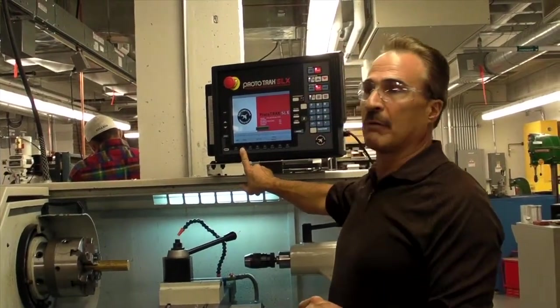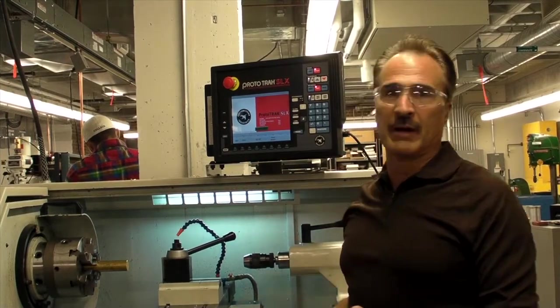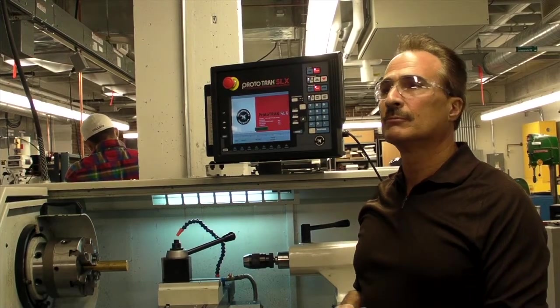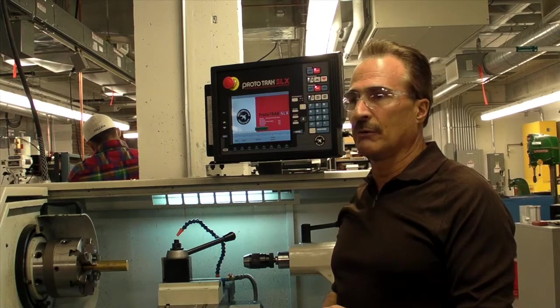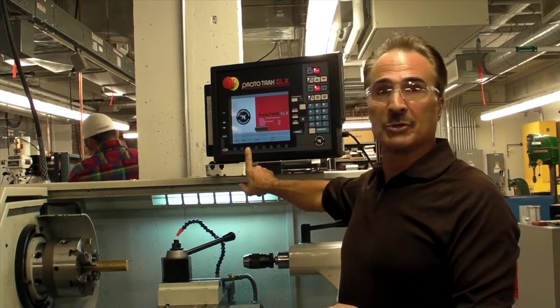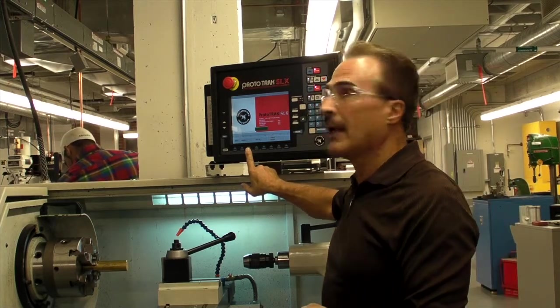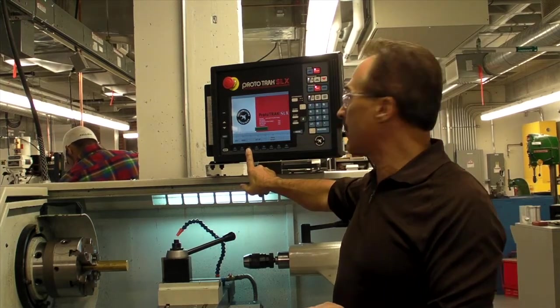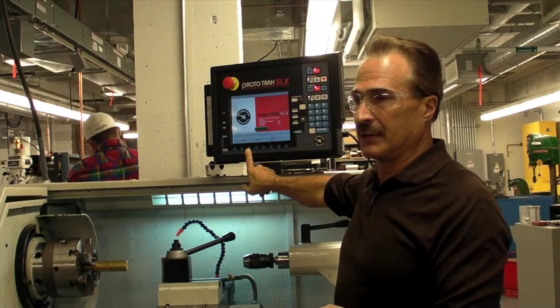The next mode is writing a program. So you go in there, you write a program. Turning, threading, grooving. And then you move on to the next mode, which is grayed out because there's no program in edit. There's no program in current memory so there's nothing to edit at this time.